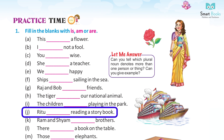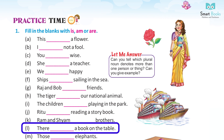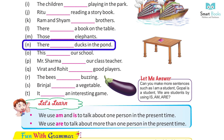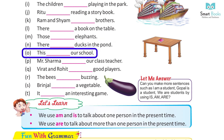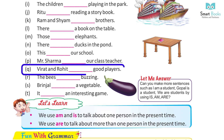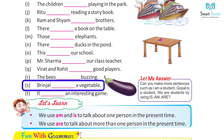H: The tiger is our national animal. I: The children are playing in the park. J: Ritu is reading a story book. K: Ram and Sham are brothers. L: There is a book on the table. M: Those are elephants. N: There are ducks in the pond. O: This is our school. P: Mr. Sharma is our class teacher.